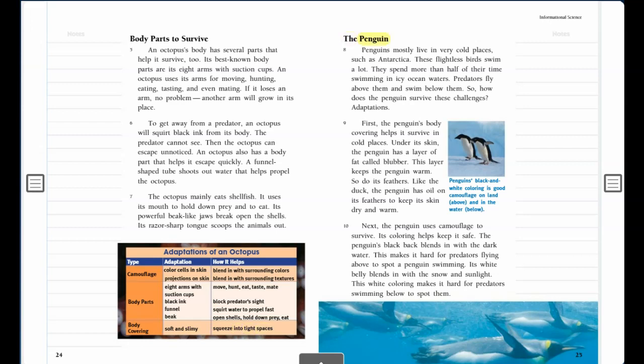The penguin. Penguins mostly live in very cold places, such as Antarctica. These flightless birds swim a lot. They spend more than half of their time swimming in icy ocean waters. Predators fly above them and swim below them. So, how does the penguin survive these challenges? Adaptations.